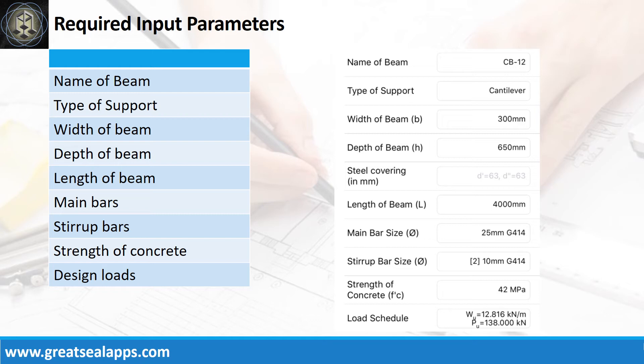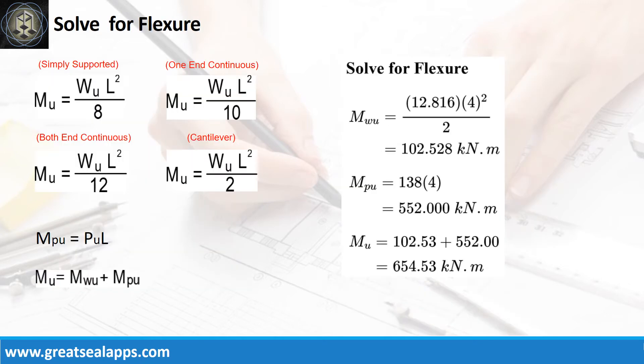Given factored uniform load equals 12.816 kN per meter, factored concentrated load equals 138 kN, and L equals 4 meters. The maximum moment from uniform load is 102.528 kN·m, and the maximum moment from concentrated load is 552 kN·m, for a total maximum design moment of 654.53 kN·m.